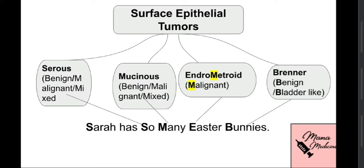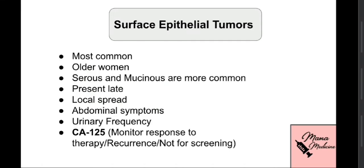Here's another mnemonic: 'Sarah Has So Many Easter Bunnies.' The 'S' in 'Sarah' stands for surface epithelial tumors — the main classification. The 'S' in 'So' stands for serous, the 'M' in 'Many' for mucinous, the 'E' in 'Easter' for endometrioid, and the 'B' in 'Bunnies' for Brenner tumor. A great way to learn the sub-classification of surface epithelial tumors.